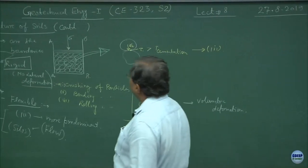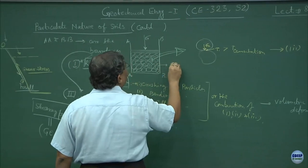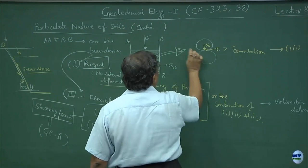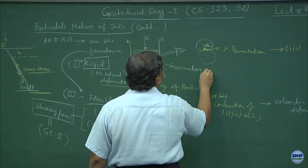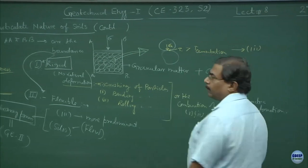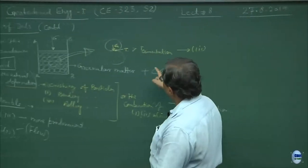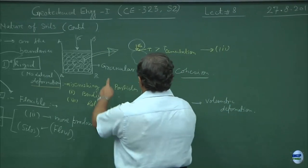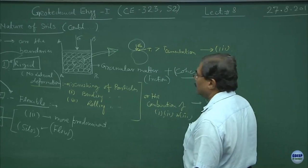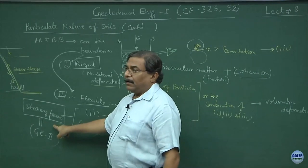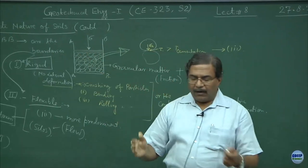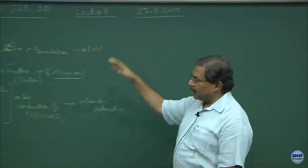Now, if I want to complicate the system and say that rather than having a granular material, suppose this material also has cohesion — the first question is how would you differentiate between the friction component of strength and the cohesion component of strength. This will be discussed in the second course. In Geotechnical Engineering 1, our emphasis is to understand the material itself rather than going into shear strength characteristics.